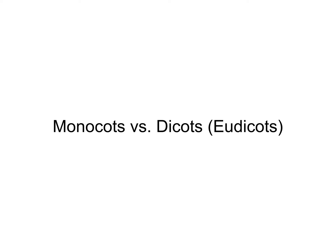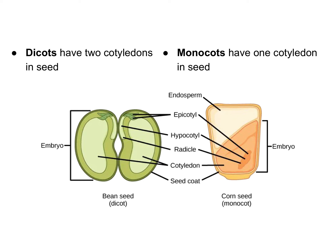Now we're going to talk about monocots and dicots and compare and contrast them. Remember, they're both angiosperms — they just have some different characteristics and are separate lineages. The defining difference is the number of cotyledons. A cotyledon is a structure that helps deliver nutrients from the endosperm to the developing embryo. Dicots (di = two) have two cotyledons, while monocots (mono = one) have one cotyledon.